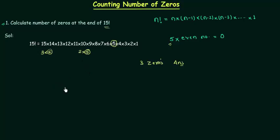For this we have one shortcut. Let's say the number is n and we want to find out number of zeros at the end of n factorial. Number of zeros is equal to n by 5 plus n by 5 raised to power 2 plus n by 5 raised to power 3 and in the same way we have to complete the sum.